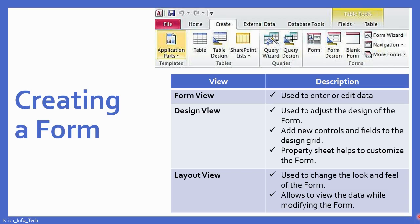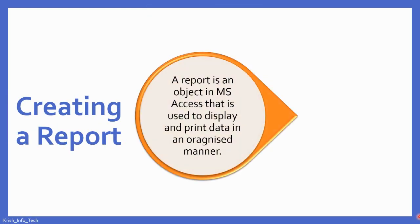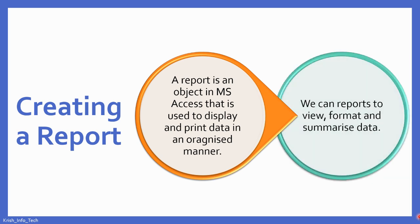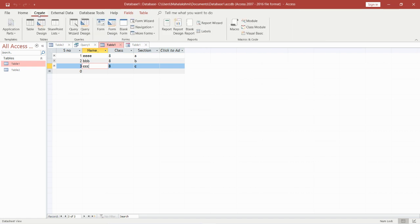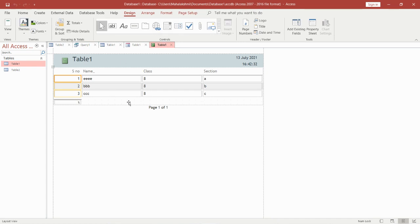Now we have done with forms. Finally, we are going to see about reports and how to create one. A report is an object in MS Access used to display and print data in an organized manner. We can use reports to create, view, format, and summarize data. I'm going to MS Access to show you. In Access, go to the Create tab — we are going for Report. Under Create, we've done Table, Query Design, and Form; now we are on Reports. Clicking on Report, we get the report based on our table. This is how a report looks.